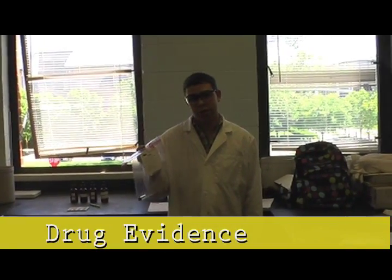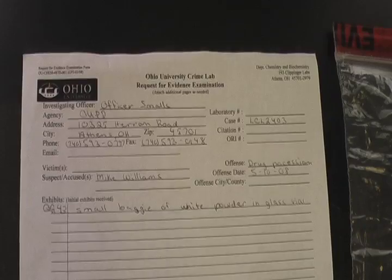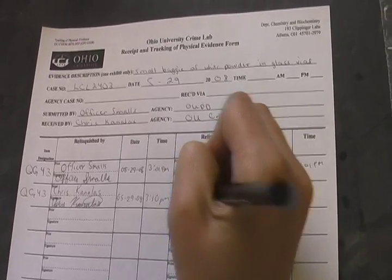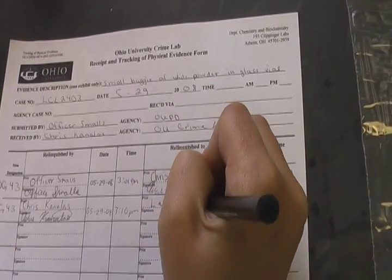We recently received an unknown drug sample from a drug raid. This sample must be identified to ensure the proper charges are brought upon the suspect. Whenever a sample is received into a crime lab, it must be logged in using a form such as this. Since I will be the one performing the chemical spot test on an unknown drug, it must first be relinquished to me.